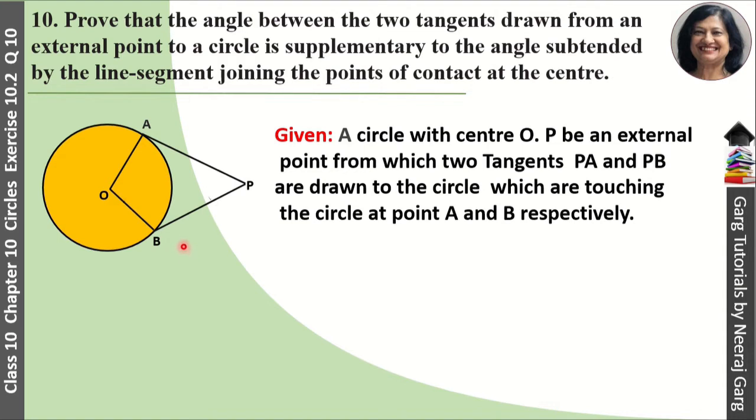And what we have to prove? We have to prove that angle APB plus angle AOB is equal to 180 degrees. We have to prove which angle and which angle subtended is at the center.